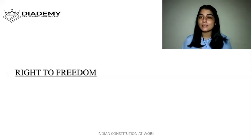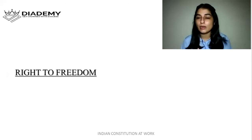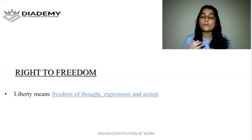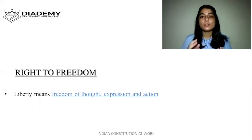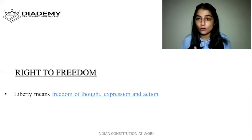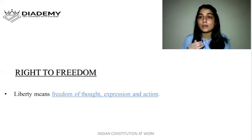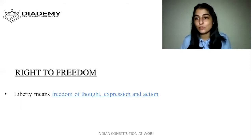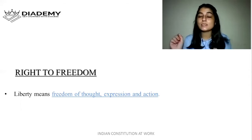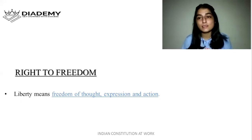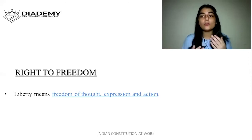The next right is the right to freedom. Under this right, we discuss Articles 19, 20, 21, and 22. Under Article 19, we have been given six types of freedoms. The first freedom is freedom of thought, expression, and action — we have freedom to have our own thoughts and to express those thoughts. Like in social media today, if anybody is not satisfied with any policy of the government, they have full freedom to express their views. But this freedom should be exercised without threatening the freedom of others.